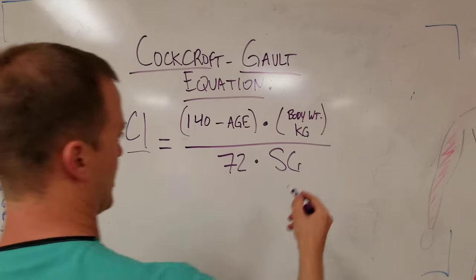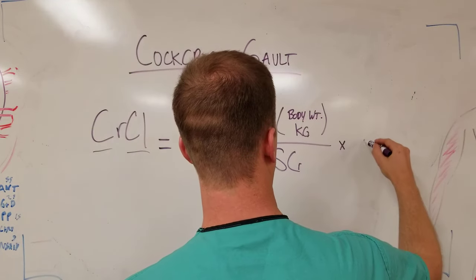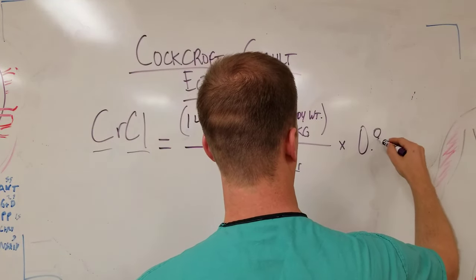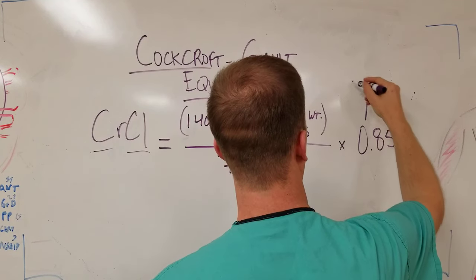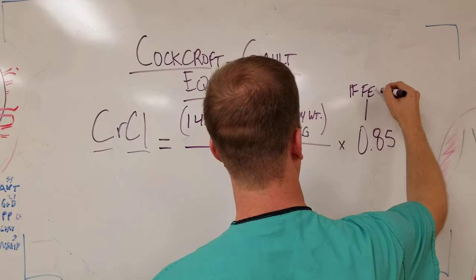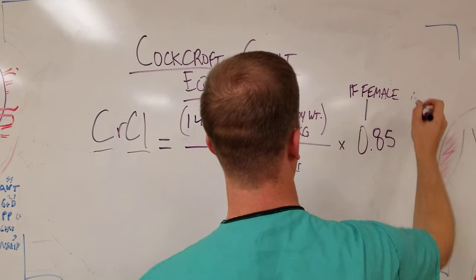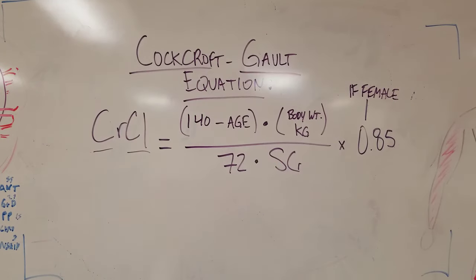The last thing here that gets a little tricky is if the patient is a female, you need to times it by another constant, and that's 0.85 if female. The reason why is because females have less of a body mass. Creatinine is a byproduct of muscle breakdown.